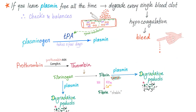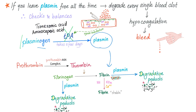Plasmin is dangerous — keep it in an inactive precursor form called plasminogen. You need TPA to convert plasminogen into the active plasmin, which will destroy the clot. So TPA activates plasminogen into plasmin to destroy the clot. Anti-fibrinolytic therapy will preserve the plasminogen — they will prevent the formation of plasmin and therefore maintain the clot.